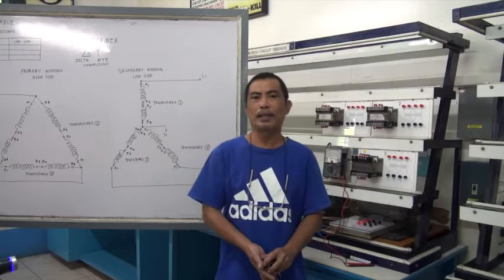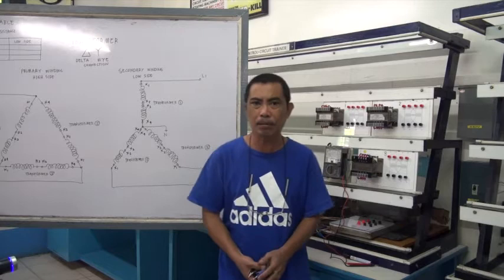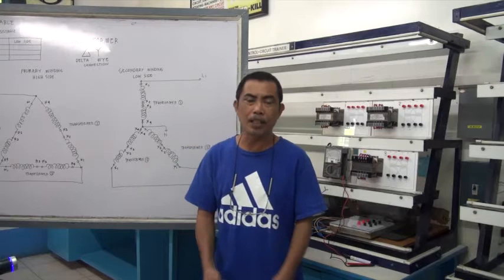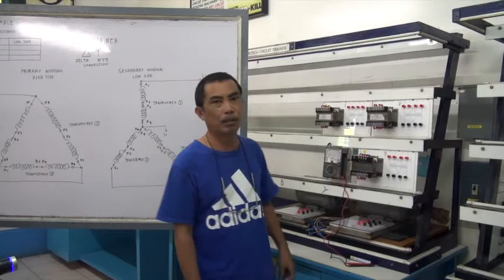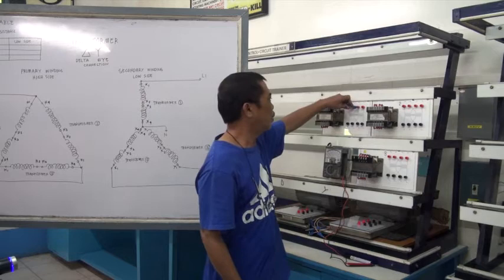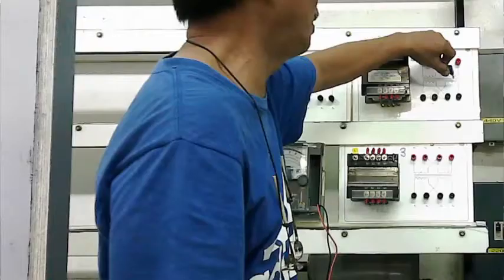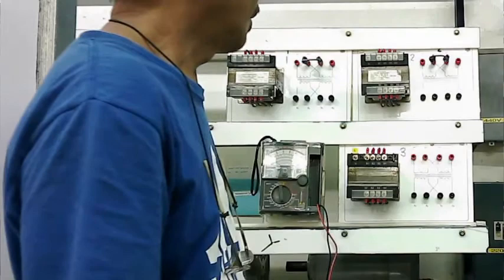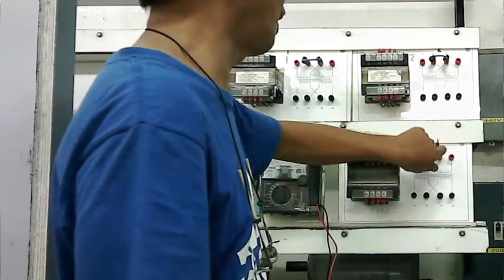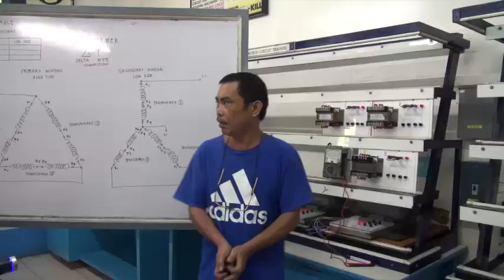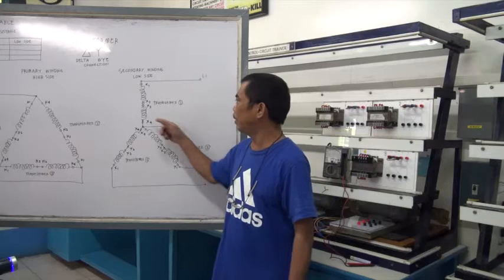We connect our transformer delta-Y based on our diagram. First, we connect terminal H2 and H3 in our three transformers — the two windings on the primary side. H2 and H3 of primary transformer number one, H2 and H3 of primary transformer number two, and H2 and H3 of primary transformer number three.